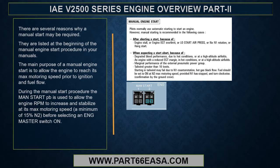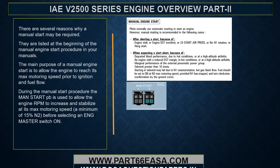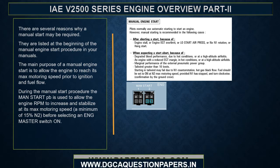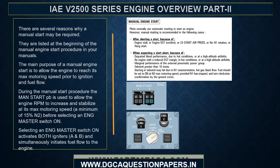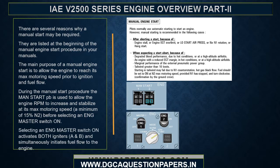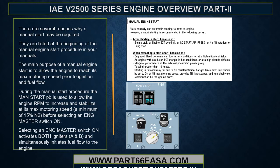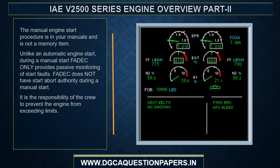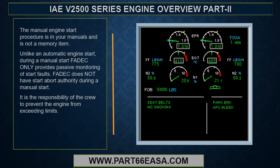During the manual start procedure, the man start push button is used to allow the engine RPM to increase and stabilize at its max motoring speed — a minimum of 15% N2 — before selecting engine master switch on. Selecting an engine master switch on activates both igniters A and B and simultaneously initiates fuel flow to the engine. The manual engine start procedure is in your manuals and is not a memory item.